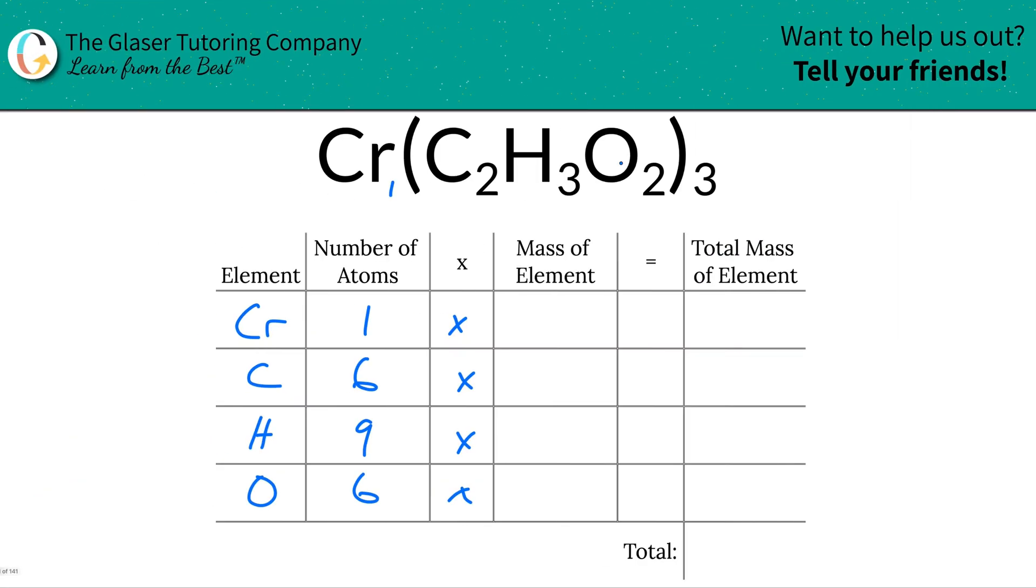Let's just plug it on in. So chromium is 52, as we mentioned. Carbon is going to be 12.01, hydrogen is going to be 1.01, and oxygen is 16.